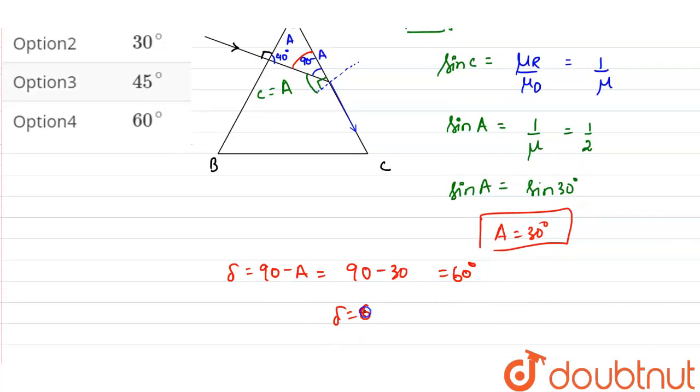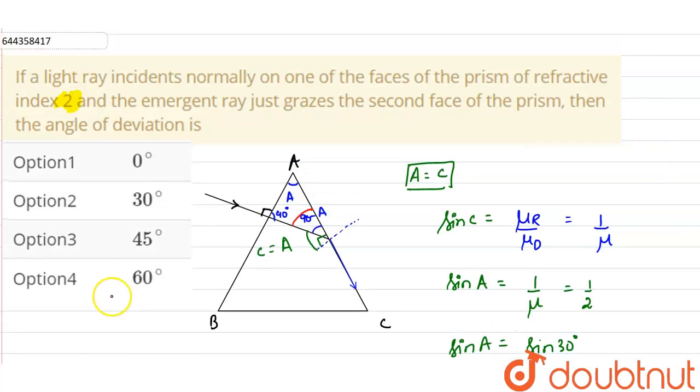Okay, so it comes out as 60 degrees. So choosing from the options, we see our option 4 is correct.